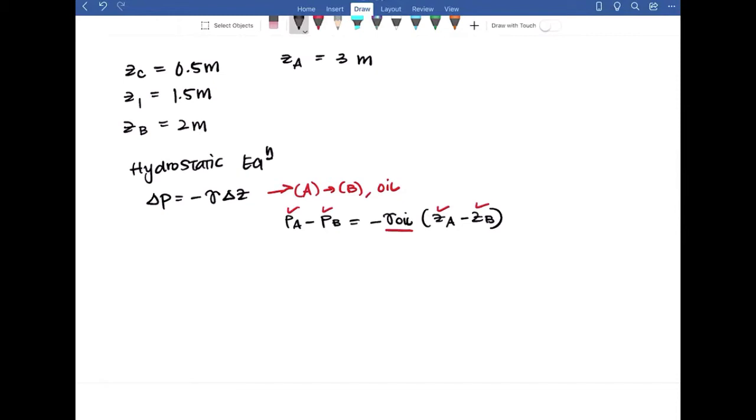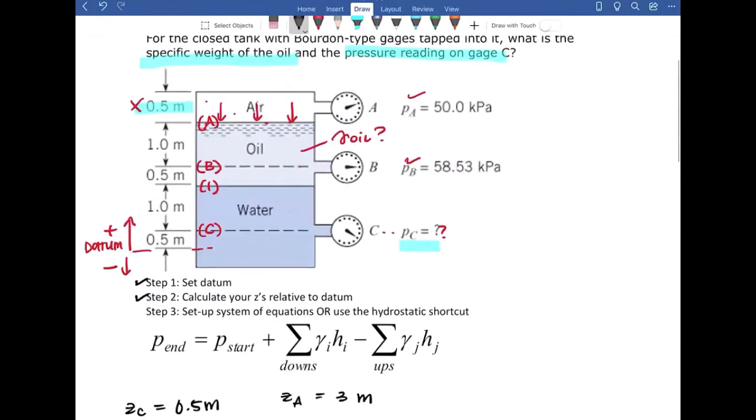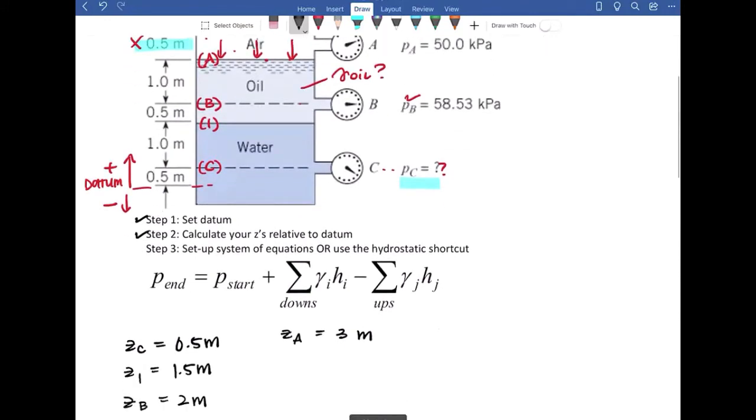We have that negative, I'm going to move it to the other side of the equation. So we'll get negative PA plus PB. I'm going to also divide by my Z, so ZA minus ZB is going to be gamma oil. So if we go to the picture here, we have PA and PB, so we can plug that into our equation.